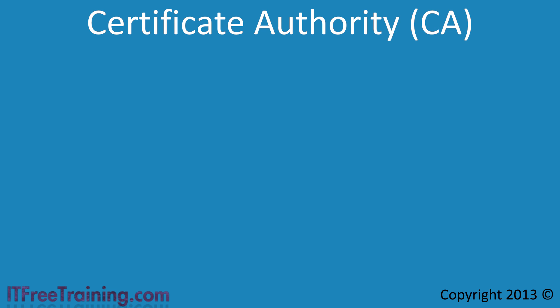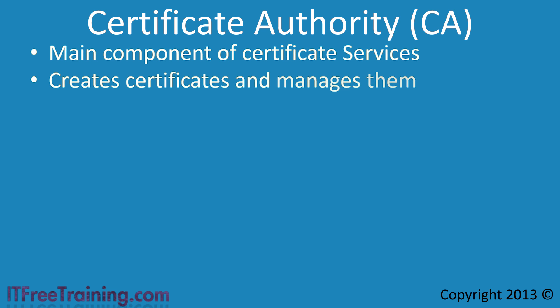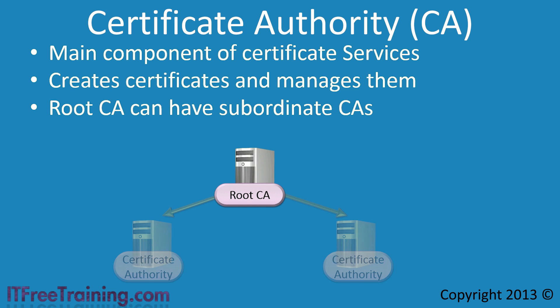The first component I will look at is the Certificate Authority component, also known as a CA. This is the main component of Active Directory Certificate Services, responsible for creating certificates that will be used by users, computers, and devices on the network. In order to start using Certificate Services on your network, you need to install a root CA. The root CA is at the top of the hierarchy. There can also be other CAs below the root CA, known as subordinate CAs. Later in the course, we will look at how these subordinate CAs work and how to install one.